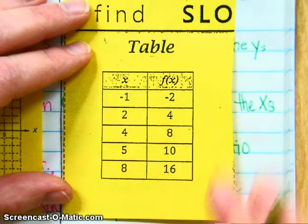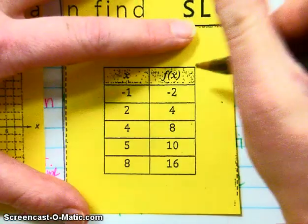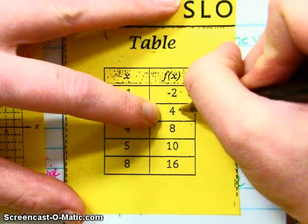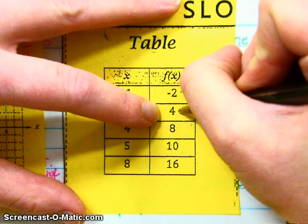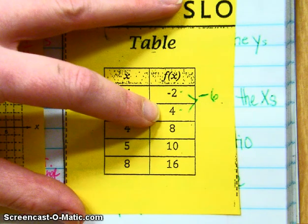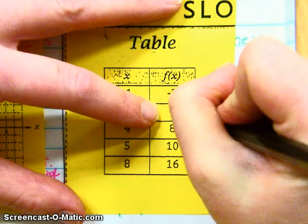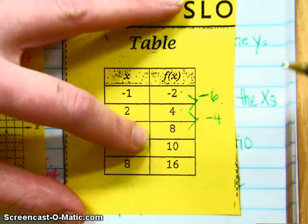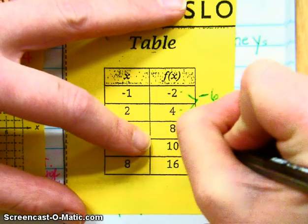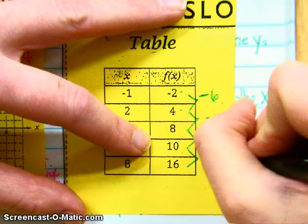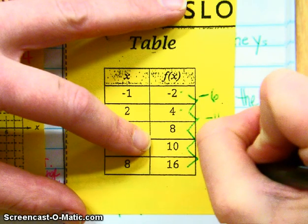So let's look at here, let's follow this step. Subtract your y's, negative 2 minus 4 will be negative 6, 4 minus 8 is negative 4, 8 minus 10 is negative 2, 10 minus 16 is negative 6.